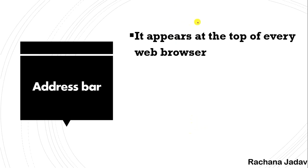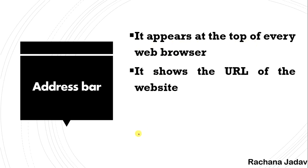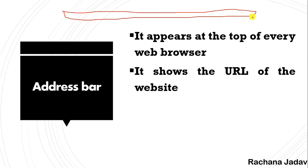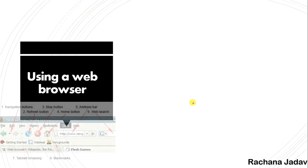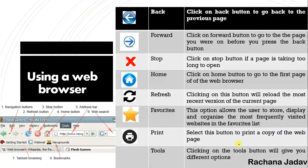The address bar appears at the top of every web browser. In any web browser you open, at the top you will see the address. For example, in Google Chrome, when you search something, you will get the URL address of that site displayed in the address bar.